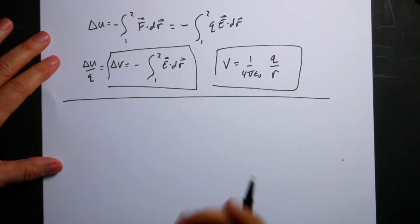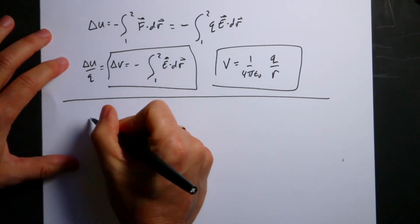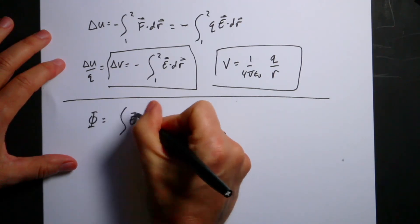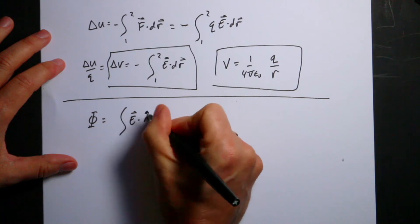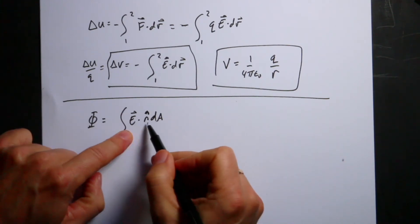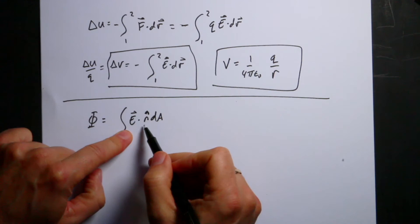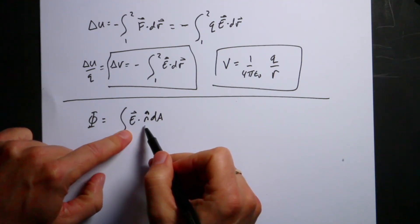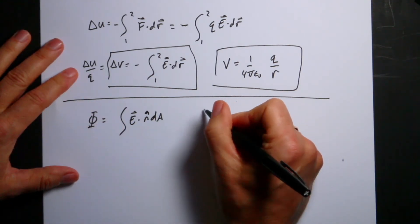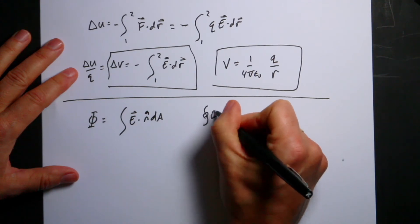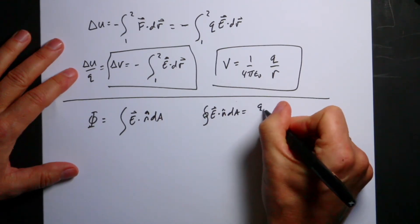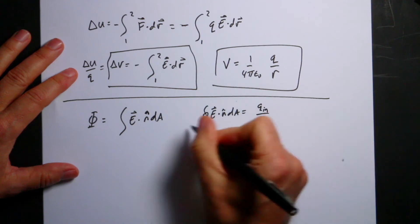I wouldn't put Gauss's law on this test's cheat sheet, but it comes up a lot. The electric flux is defined as the surface integral: Φ = ∬ E · n̂ dA, where n̂ is the unit vector normal to the surface. Gauss's law states that for a closed surface: ∮ E · n̂ dA = Q_enclosed / ε₀.